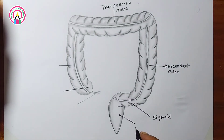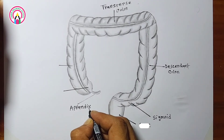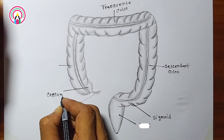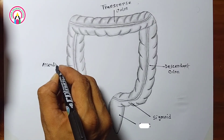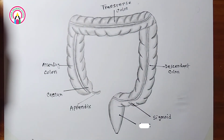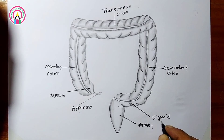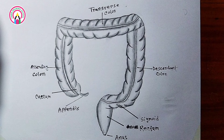Two: colon. Ascending colon — travels upward on the right side of the abdomen. Transverse colon — runs horizontally across the abdomen. Descending colon — travels downward on the left side of the abdomen. Sigmoid colon — an S-shaped section that connects to the rectum.